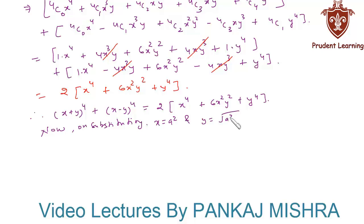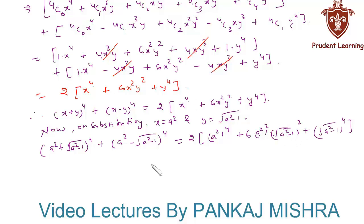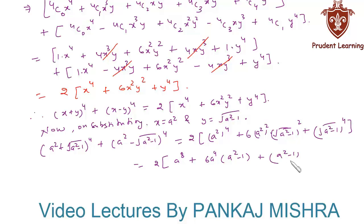Now, substituting x = a² and y = √(a²-1) back into the expression, we get 2·(a²)⁴ + 6·(a²)²·(√(a²-1))² + (√(a²-1))⁴, which simplifies to 2(a⁸ + 6a⁴(a²-1) + (a²-1)²).